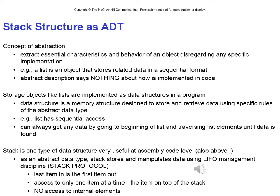A list has sequential access — you can always get to any data by going to the beginning of the list and traversing until the element is found. A stack is a data structure very useful at the assembly level. It stores and manipulates data using a protocol called the management discipline of the stack. The defining characteristic of a stack is LIFO — last in, first out. The last item pushed on the stack is the first item to be popped off. You cannot access any internal elements; you can only access the item at the top of the stack.